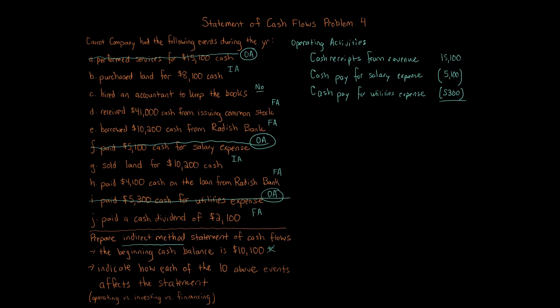Those are all of our operating activities. We can go ahead and put our net cash flow from operating activities. Remember, other items that also go in operating activities include current assets, current liabilities, net income, net loss, gains, and losses. The net cash flow from operating activities is positive $4,700.